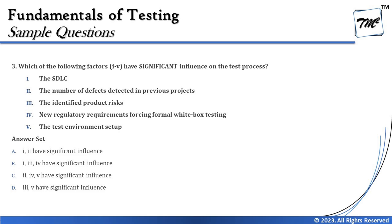Looking at the five items: Number One — the SDLC, which is one of the key criteria that drives your test process. Number Two — the number of defects detected in previous projects. That could be a good reference but not something that significantly influences the test process overall. Number Three — the identified product risk. That is a key contributor to the overall test process, because once product risks are identified you need to mitigate them, making it a key factor in defining your test process.